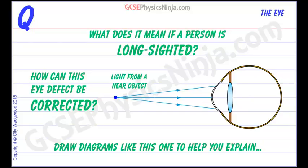So we're going to take a look at some ray diagrams to explain what it means to be long sighted and how this can be corrected.